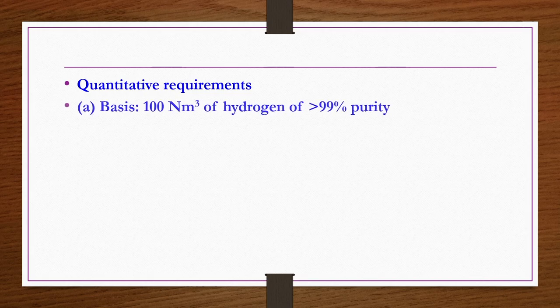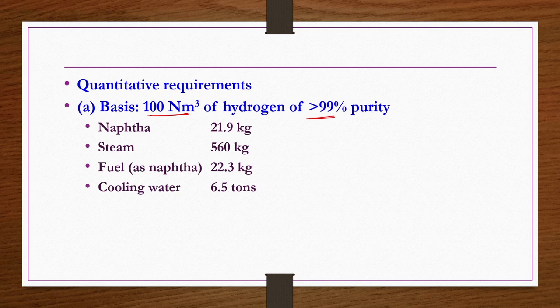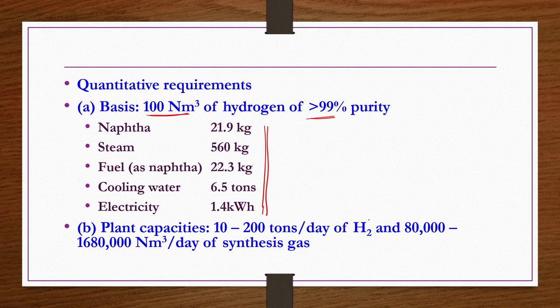Quantitative requirements: to produce 100 normal cubic meters of hydrogen at over 99% purity, you need 21.9 kg of naphtha, 560 kg of steam, 22.3 kg of naphtha as fuel, 6.5 tons of cooling water, and 1.4 kWh of electricity. These values are based on proper material and energy balance calculations. Plant capacities: for H2 alone, 10 to 200 tons per day is possible; for synthesis gas (CO plus H2), over 80,000 normal cubic meters per day can be produced.